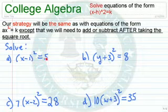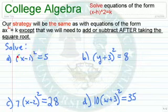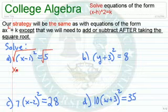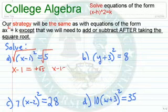Consider x minus 1 squared equals 5. Normally we want to get x squared by itself, but because the expression is in parentheses, we can take the square root of both sides of this equation. The square root of x minus 1 squared — the square root and the square undo each other — giving us x minus 1 equals plus or minus the square root of 5.